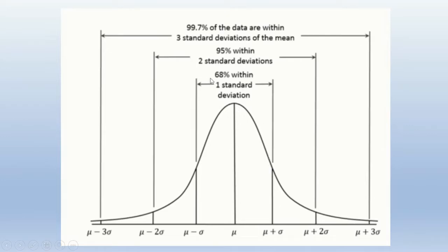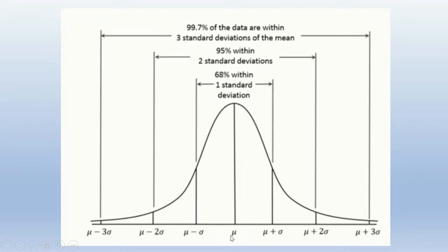The deviation covering 68% of the data is one standard deviation — mean plus or minus one standard deviation. If you get 95% of students who are below or above the mean, that is two standard deviations. And 99.7% of the data is within three standard deviations. So if you're given the mean and standard deviation, you can estimate how many students are expected to be below or above the average.